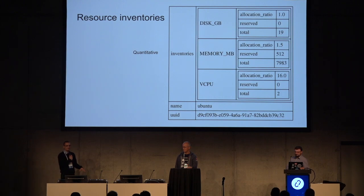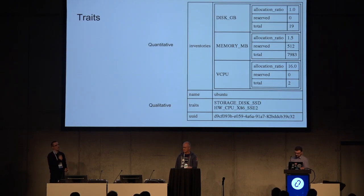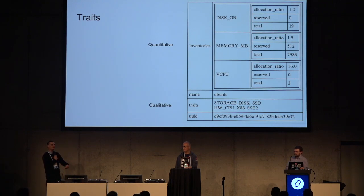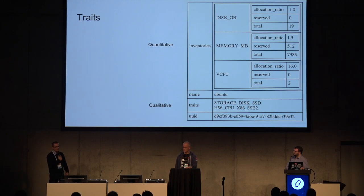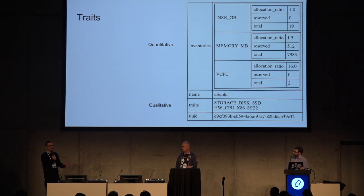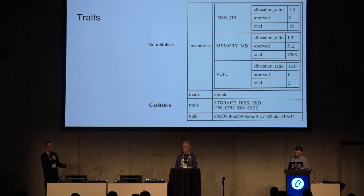This is the quantitative view of the system — these are resources that can be consumed. But there is also a qualitative view where you describe traits. For example, if your compute host provider tells Placement it provides 10 gigabytes of disk, it might also want to describe whether that disk is a solid-state disk or a spinning disk, because that affects quality of service. This information is stored in Placement as a trait — like a storage disk SSD trait. So you have quantitative view with resources and qualitative view with traits.